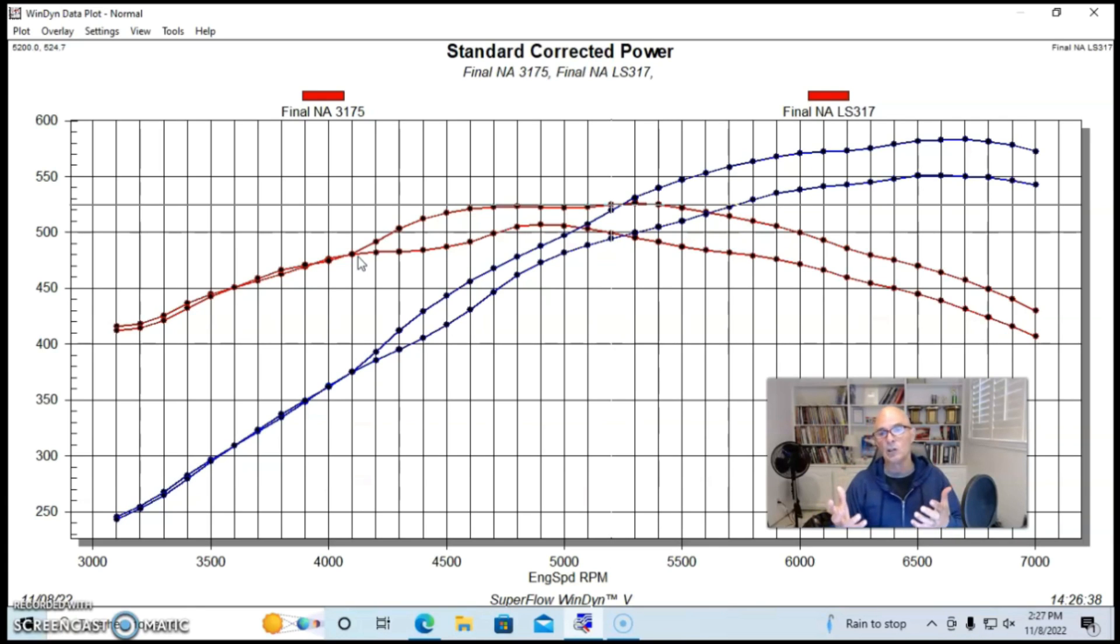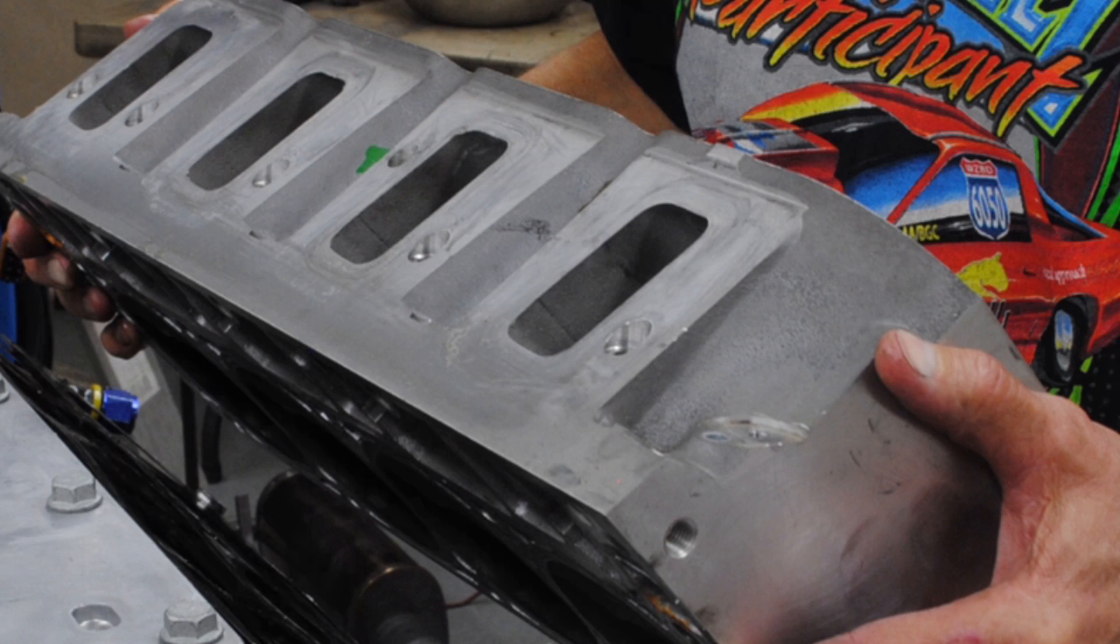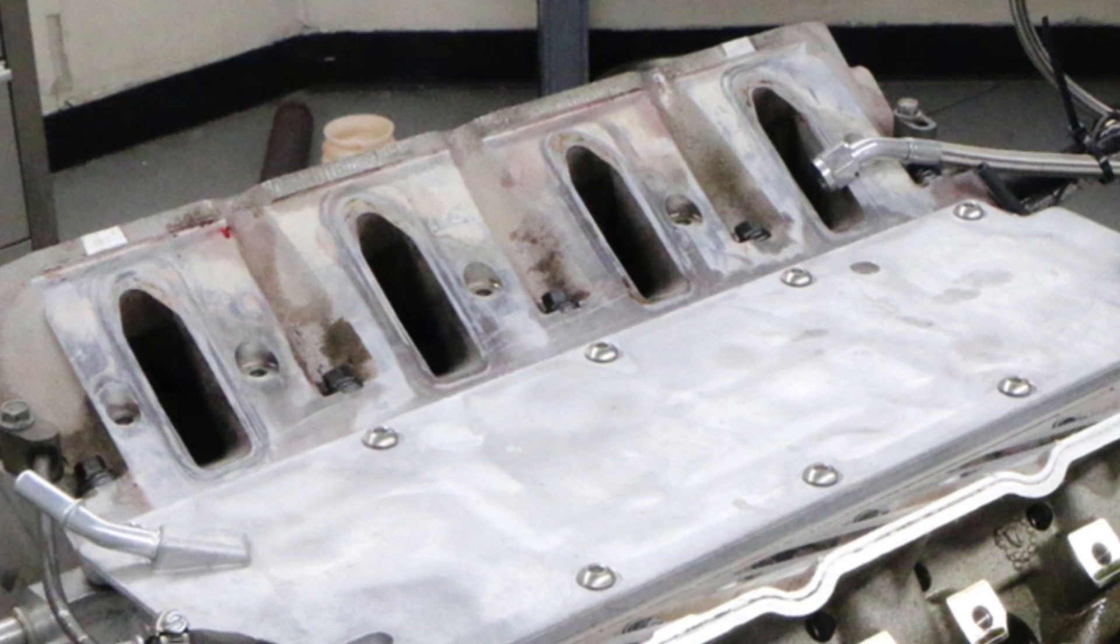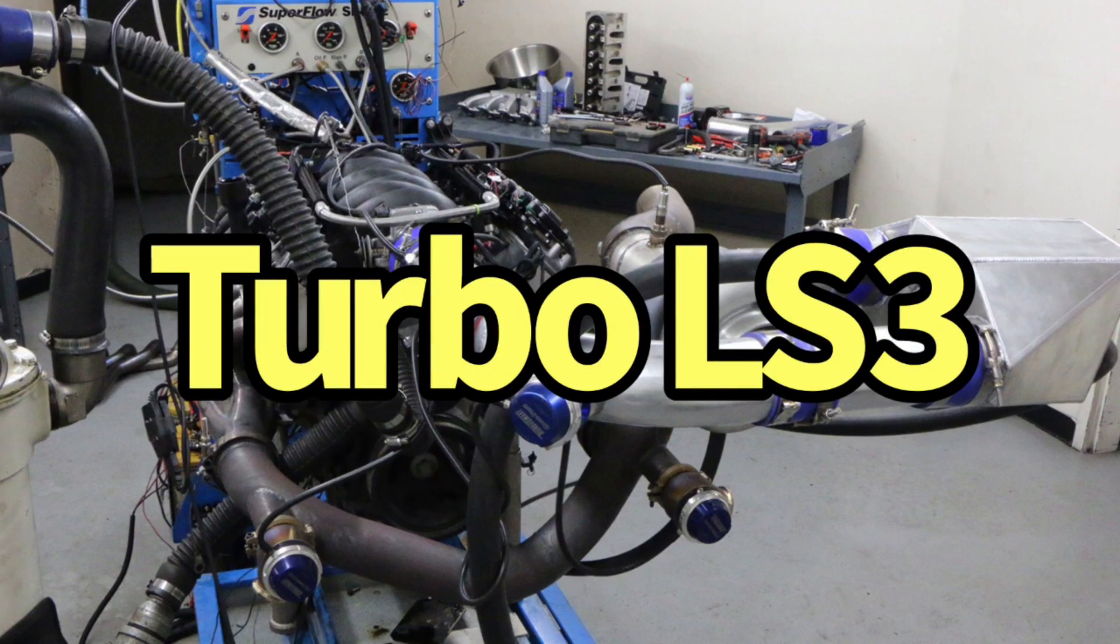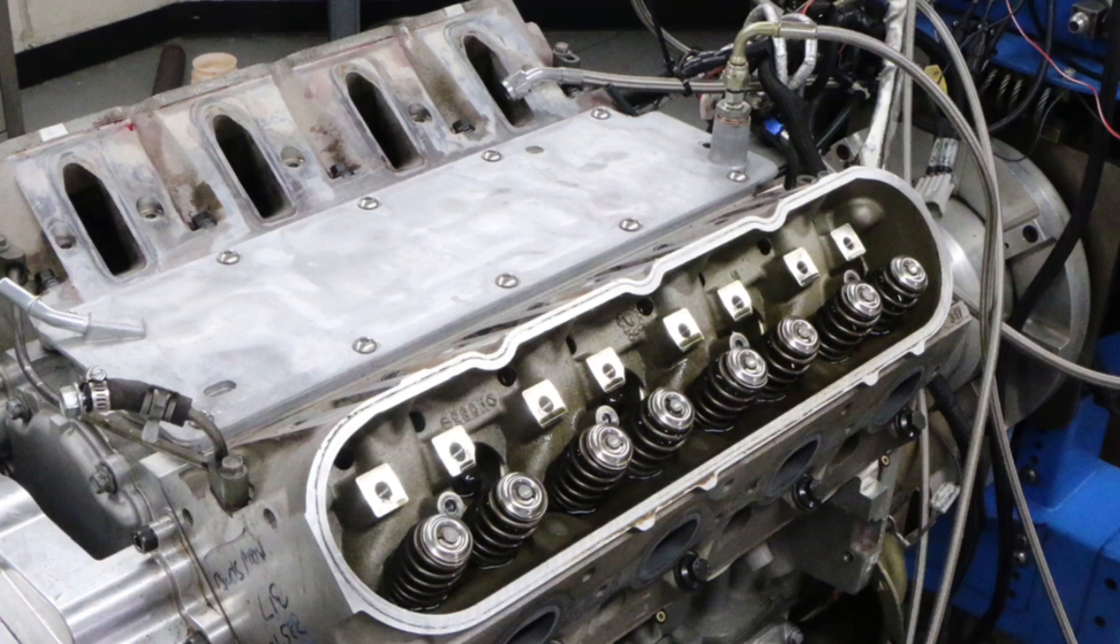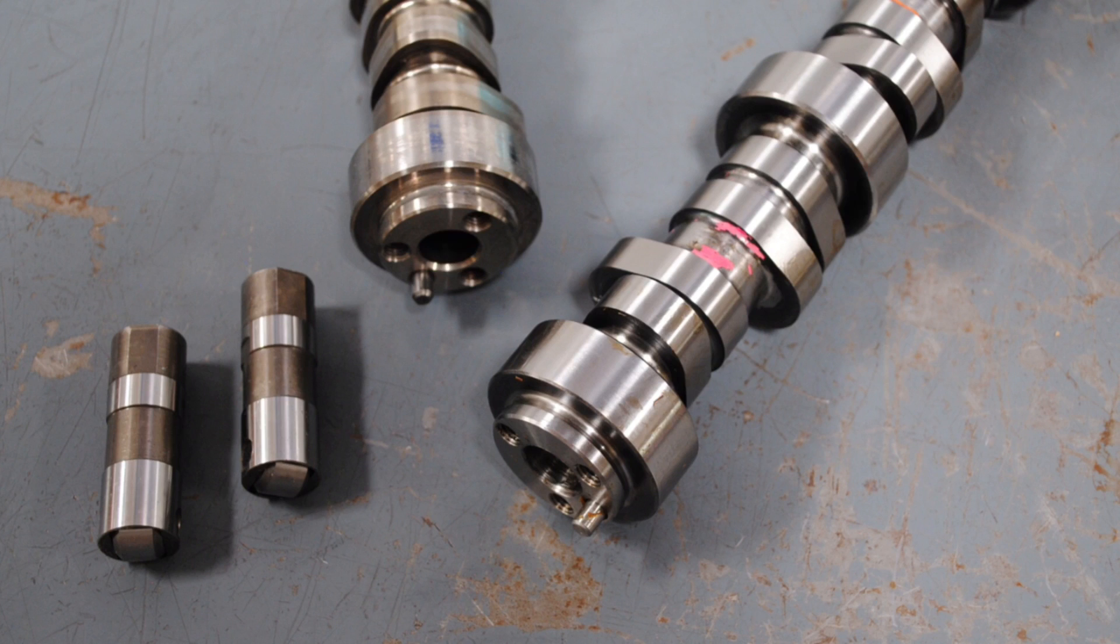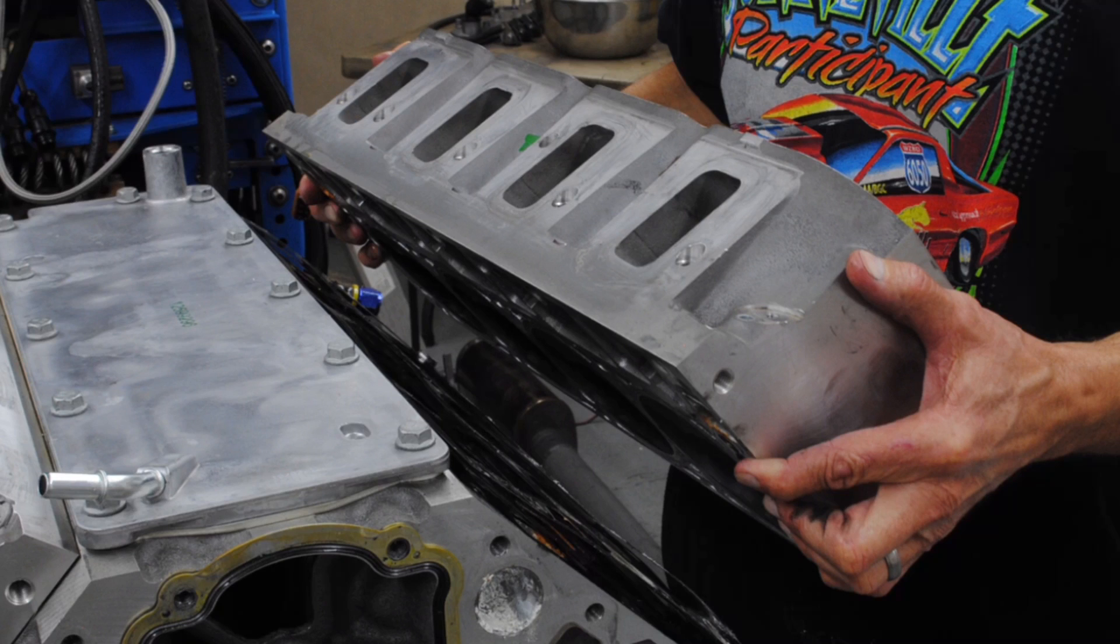Were you to run this comparison with a set of 243 heads, you'd see more power down low with the cathedral port head, but they would never make the power up top that a rec port head does. So now that we've taken a look at what happens when we run the rec port head versus a cathedral port head, we know what happens NA, but what happens when we run boost.